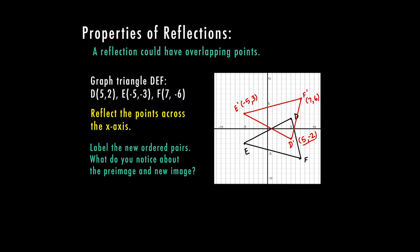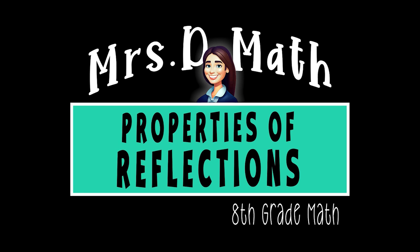Looking at point D: it's now at (5, −2), started at (5, 2) — the x stayed the same and the y is the opposite, because we were reflecting across the x-axis. The same holds for all three points: for E and F, the x stays the same and the y is opposite. The size of the triangle did not change — it has just flipped to a new position on the graph according to the line of reflection, whether that's the x-axis or the y-axis.